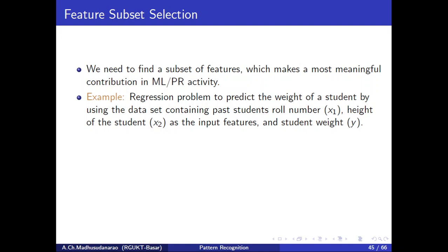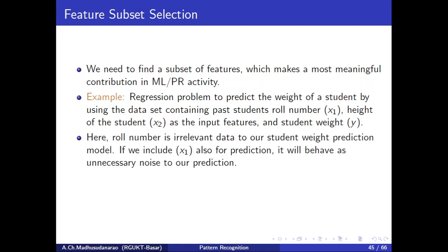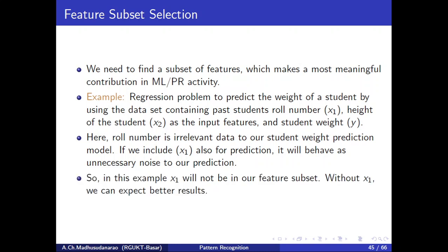We need to find a subset of features which makes the most meaningful contribution in our machine learning or pattern recognition activity. For example, consider the regression problem to predict the weight of a student using a dataset containing past students' roll number and height as input features, and student weight as the output feature Y. Here, roll number is irrelevant to our student weight prediction model. If we include X1, i.e., roll number, for prediction, it will behave as unnecessary noise. So X1 will not be in our feature subset — without X1, we can expect better results.